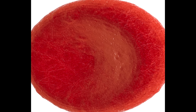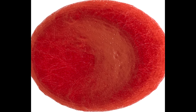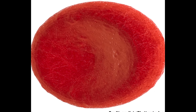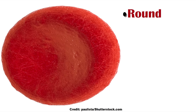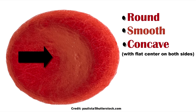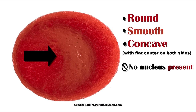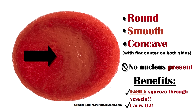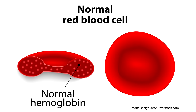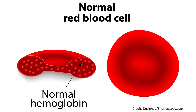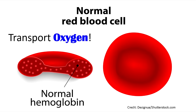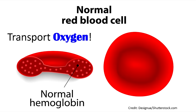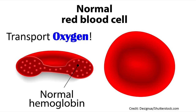Let's talk about pathophysiology. A normal red blood cell should be nice and round, smooth, and concave with a flat center on both sides. Red blood cells have no nucleus, which allows them to easily squeeze through vessels and carry oxygen. Normal hemoglobin A helps transport oxygen from the lungs to all vital organs and tissues. We can only do this well with normal hemoglobin A.